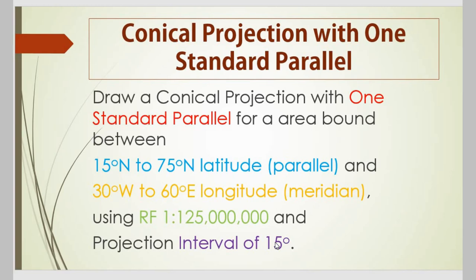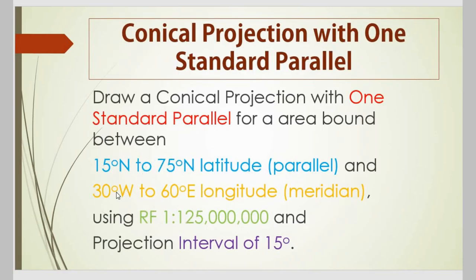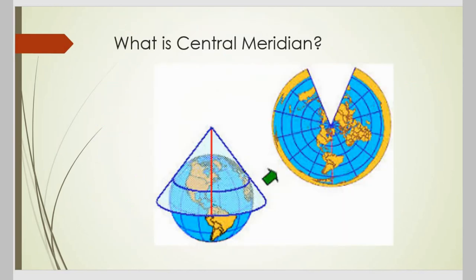The central meridian is the vertical line or line of longitude which lies exactly in the middle of our required projection. To find the central meridian, we simply find the middle value of the range given in the question. Given the range from 30 degrees west to 60 degrees east, we will make a list of meridians and find which one is the central meridian.